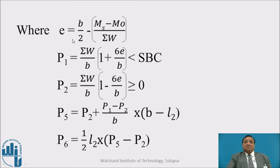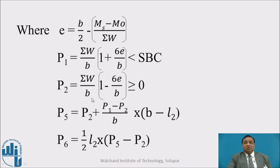E is the eccentricity, which is B/2 minus (sum of stabilizing moments minus overturning moments) divided by the sum of all downward loads. P1 = (ΣW/B) × (1 + 6E/B), which should be less than the safe bearing capacity of soil. P2 = (ΣW/B) × (1 - 6E/B), which should be greater than or equal to 0. P5 = P/2 + (P1 - P2)/B × (B - L/2). And P6 = ½ × L2 × (P5 - P2).